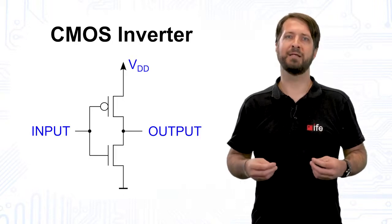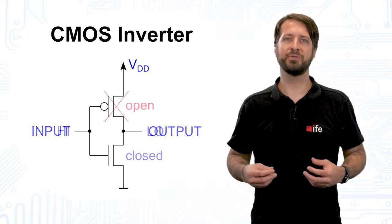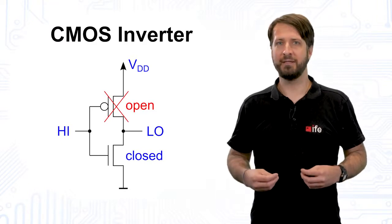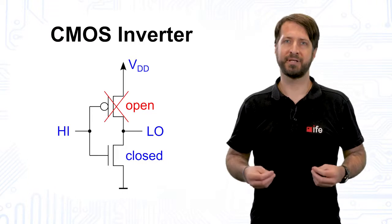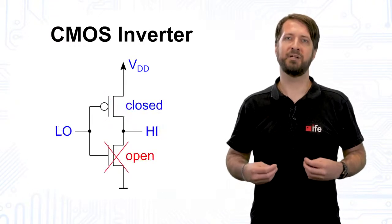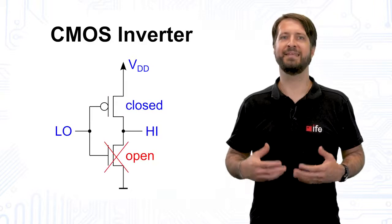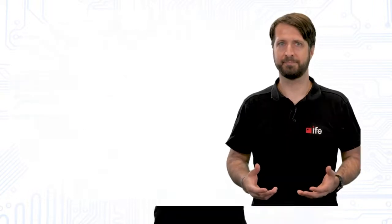If we apply a high level at the input of the inverter, the NMOS closes again, but the PMOS will stay open. Vice versa, by applying low level at the input, the PMOS closes and the NMOS opens.